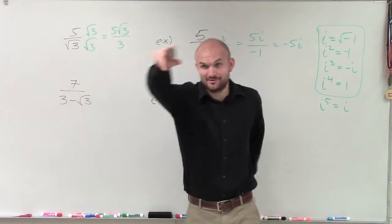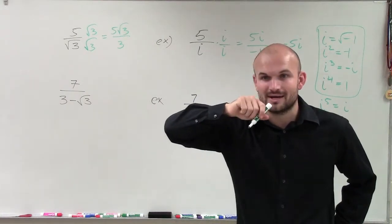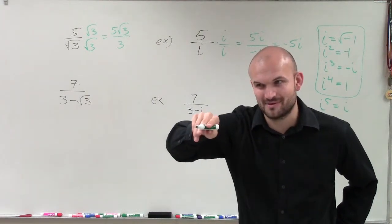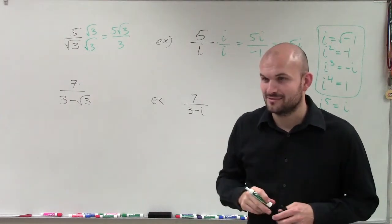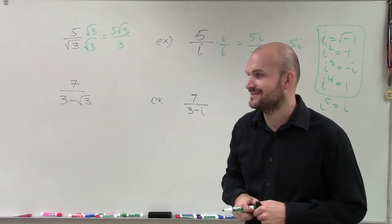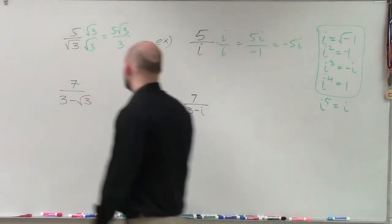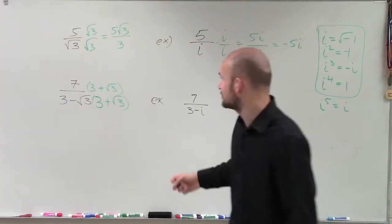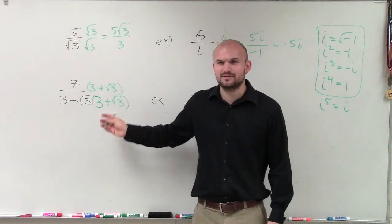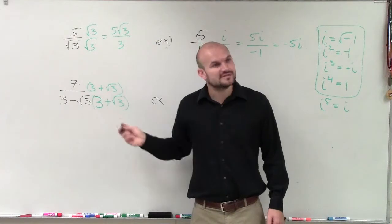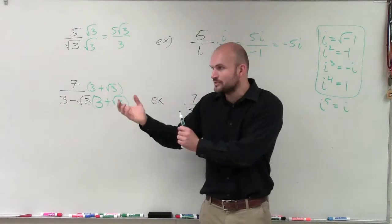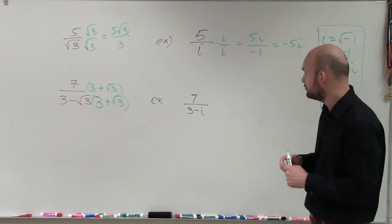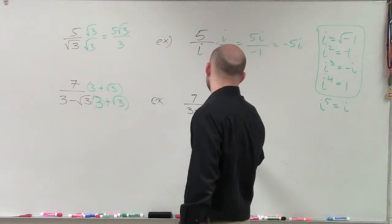For 7 over 3 minus i, remember when we had a binomial with a square root in the denominator, we multiplied by something — the conjugate. The conjugate changes the sign between the terms. The conjugate works because it produces a difference of two squares pattern, where the middle terms cancel out. So the conjugate of 3 minus i is 3 plus i.